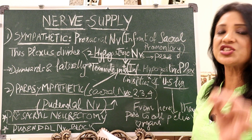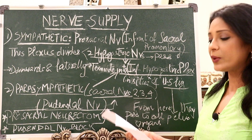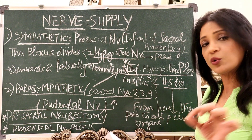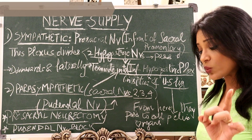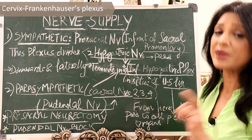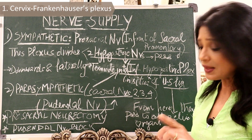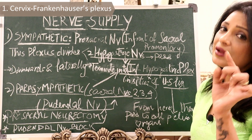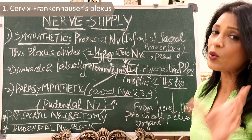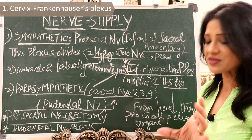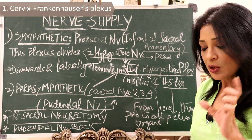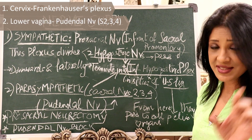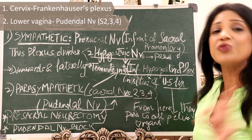To summarize the nerve supply — the cervix is surrounded by a rich plexus of nerves known as Frankenhauser's plexus (F-R-A-N-K-E-N-H-A-U-S-E-R). Lower vagina is supplied by the pudendal nerve, that is S2, S3, and S4 fibers of the parasympathetic.